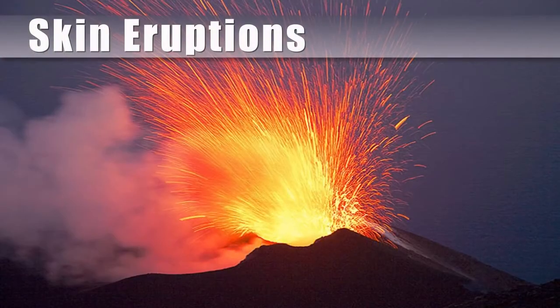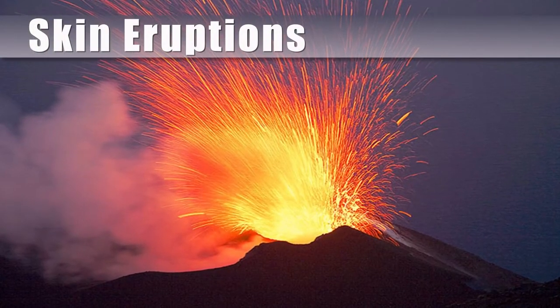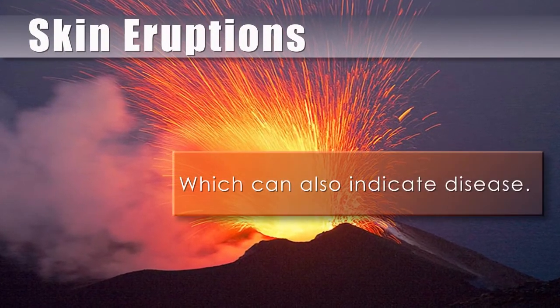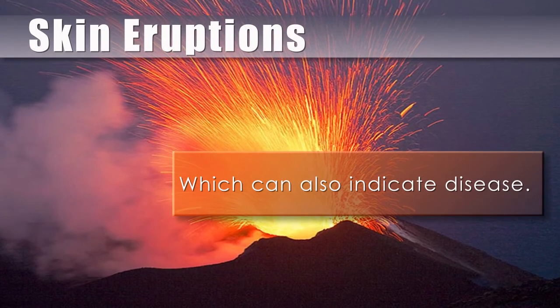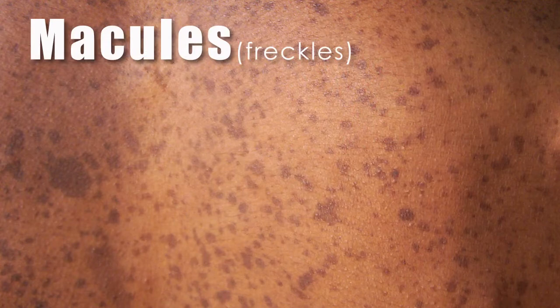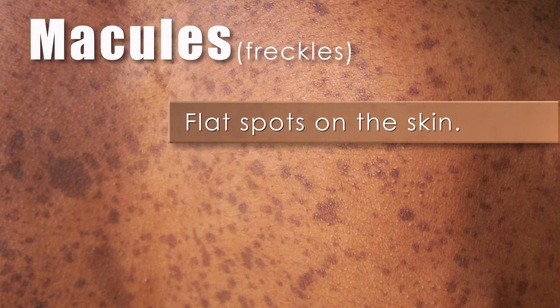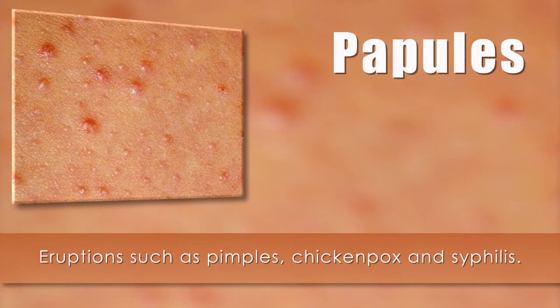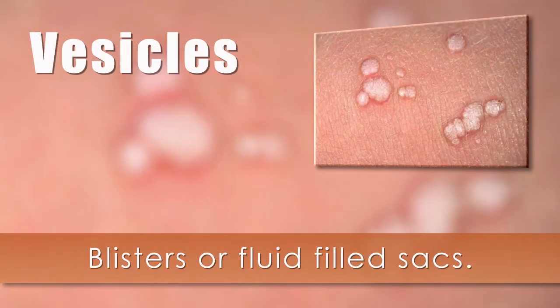The last function we will discuss is skin eruptions, which can also indicate disease. Here is a list of some of the skin eruptions. Macules, also known as freckles, are flat spots on the skin. Papules are eruptions such as pimples, chicken pox, and syphilis. Vesicles are blisters or fluid-filled sacs.